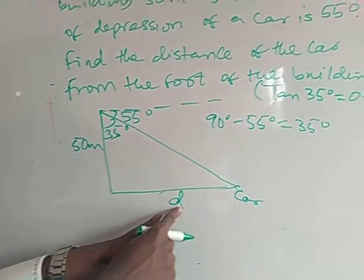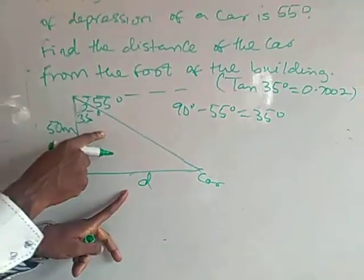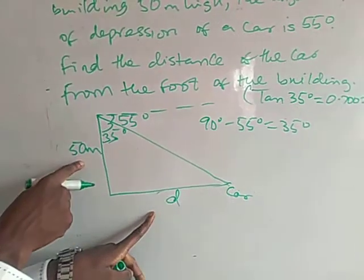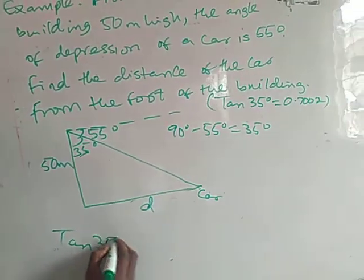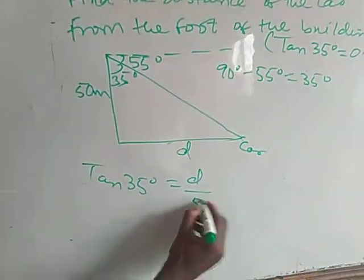As you can see now, the distance here is the opposite side of the angle. So, opposite over adjacent: tan 35 degrees equals D over 50 meters.